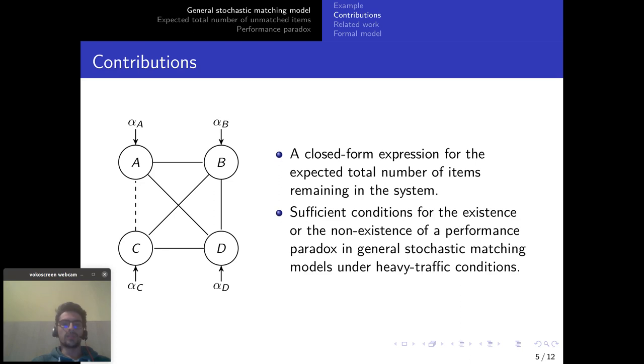And so I'm going to present two of our main contributions. One is a closed form expression for the expected total number of items remaining in the system, so the measure of performance. And the second result is sufficient conditions for the existence or the non-existence of a performance paradox. And there are heavy traffic conditions that I will detail later on.